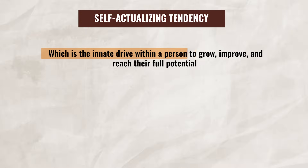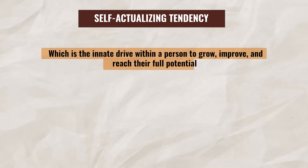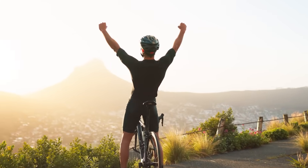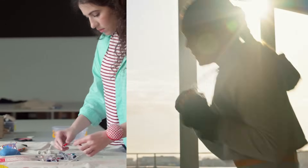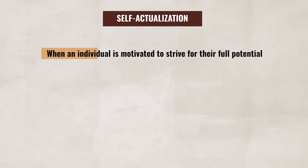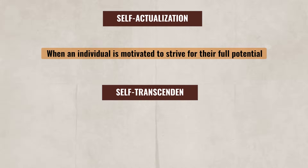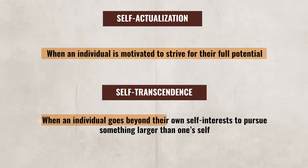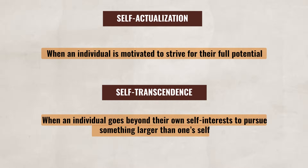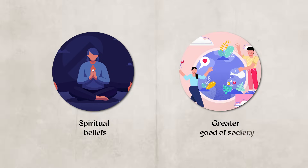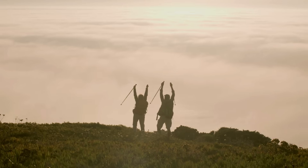Part of humanistic psychology also focuses on a person's desire to reach their full potential. This is known as the self-actualizing tendency, which is the innate drive within a person to grow, improve, and reach their full potential. According to humanistic theorists, this motivation exists in everyone — it's what pushes a person to be creative, authentic, and live a fulfilled life. Sometimes students mix up self-actualization with self-transcendence. Self-actualization is when an individual is motivated to strive for their full potential, while self-transcendence is when an individual goes beyond their own self-interest to pursue something larger than oneself, such as spiritual beliefs or the greater good of society.